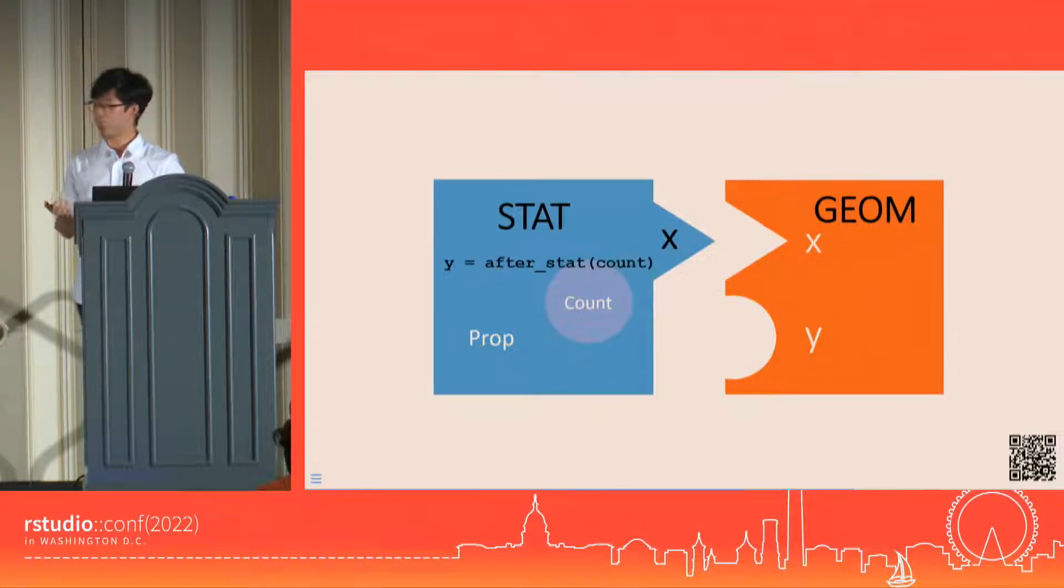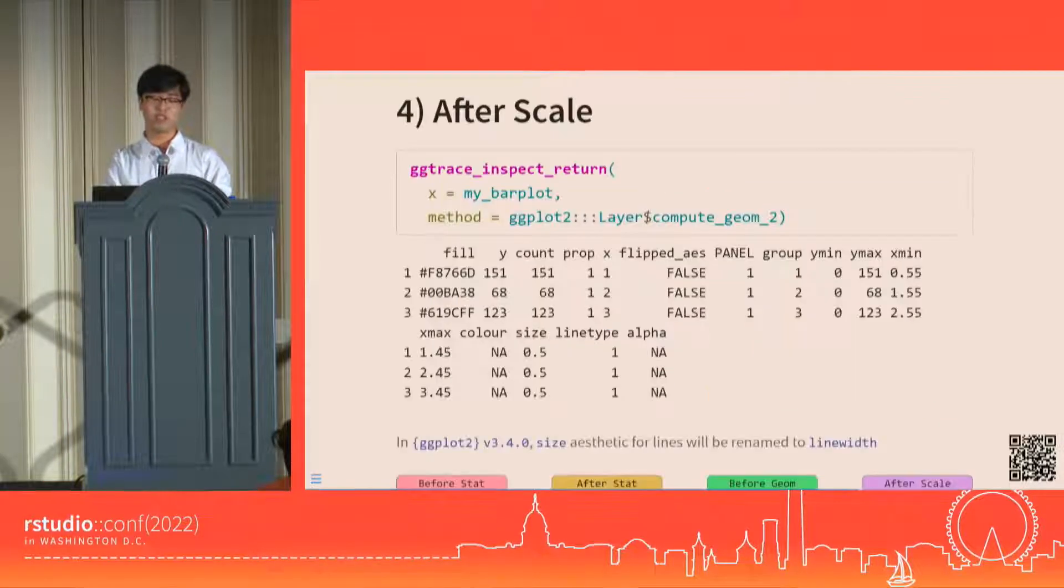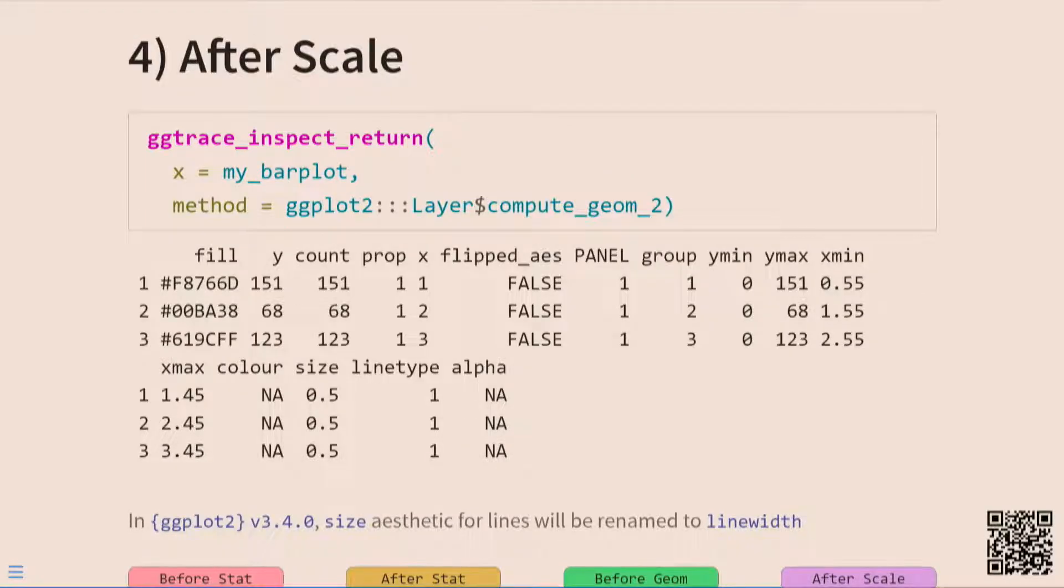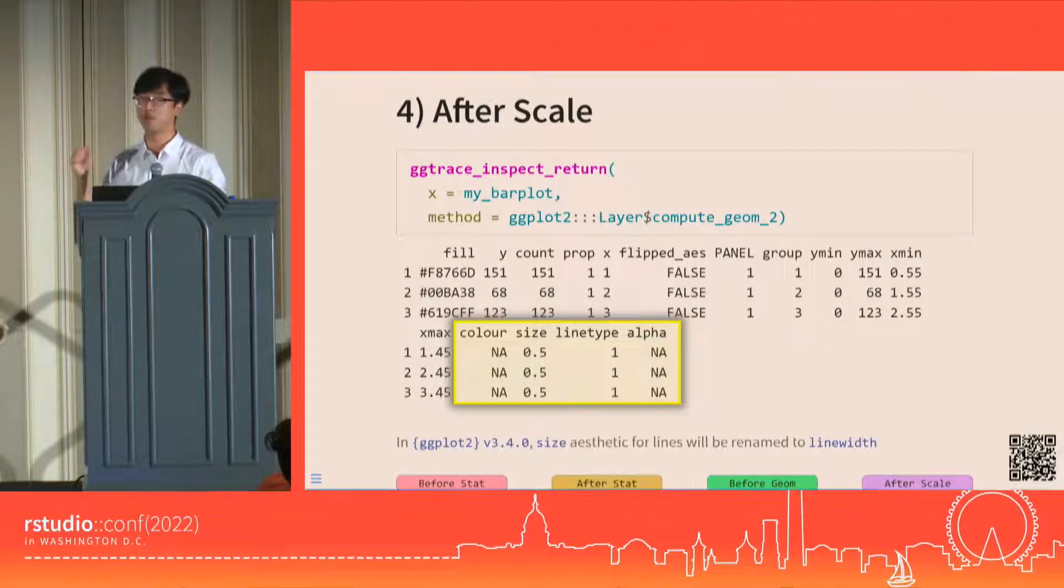The next time that we intercept the data is in the after scale stage. By this point, the non-positional scales have stepped in to transform aesthetics like fill, which is now a column of the actual color values instead of the names of the penguin species. We also see that the bar geom has stepped in to add default values for bar-related aesthetics, which are again just columns like color and size. This stage is significant because just like the after stat, we can declare more aesthetic mappings one last time before the data is sent off to be drawn.